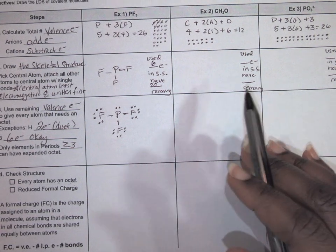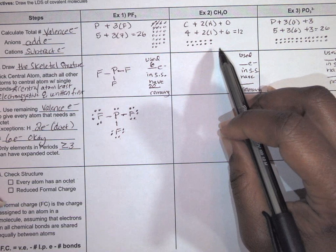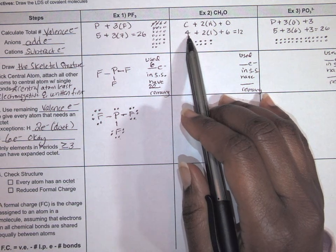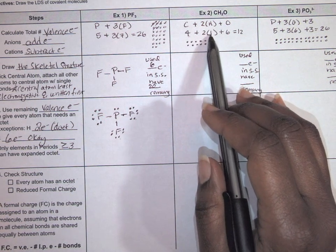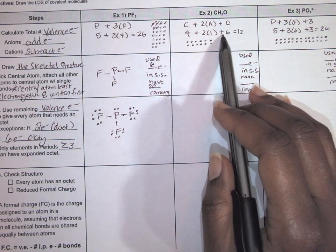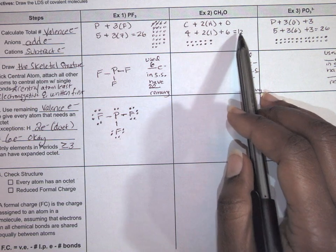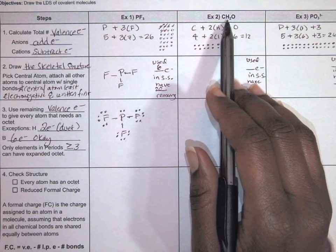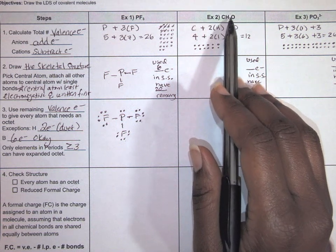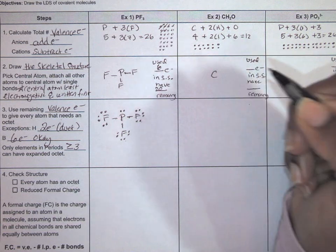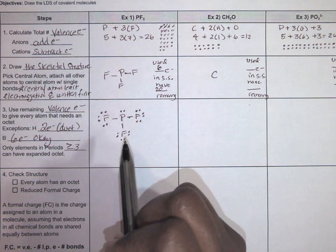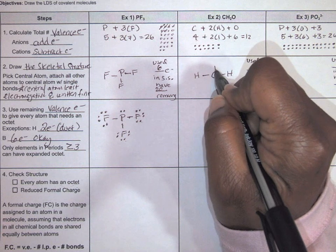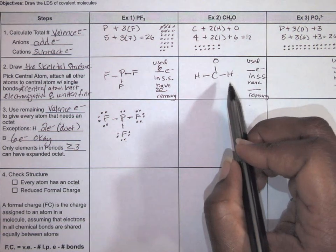The next example is CH2O — formaldehyde. We start by figuring out the total number of valence electrons. Carbon is in group 14 with four valence electrons. Hydrogen is in group 1, and there are two of them, giving two electrons. Oxygen contributes six. So four plus two plus six gives us 12 total valence electrons. For the skeletal structure, you might think hydrogen is least electronegative and should go in the center, but remember hydrogens can never go in the center. So carbon goes in the center, and we attach the two hydrogens and the oxygen to it with single bonds.